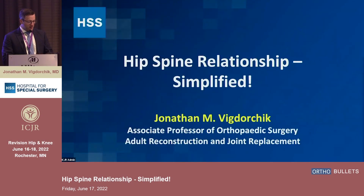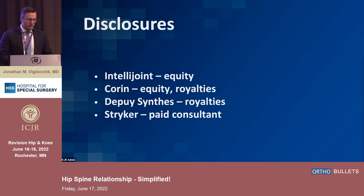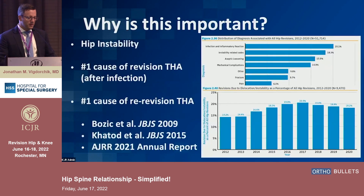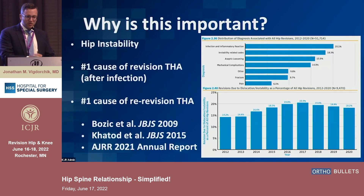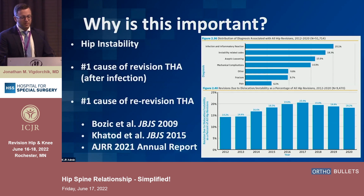Good morning everyone. A couple disclosures — some of the concepts in this talk are built into some software you see there. Hip instability is the number one cause of revision total hip after infection, and it's always around 18 to 20 percent of all the revisions we do. So this is a very important topic.